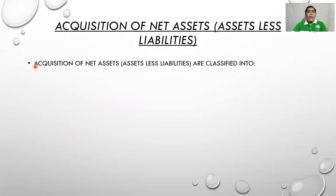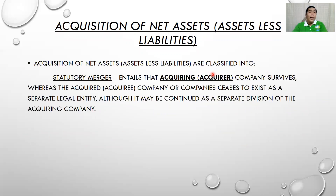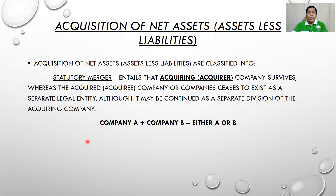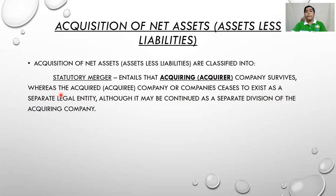Acquisition of net assets is classified into two types. First is the statutory merger, and second is the statutory consolidation. For the statutory merger: the acquiring or acquirer company survives, whereas the acquired or acquiree company ceases to exist as a separate legal entity, although it may be continued as a separate division of the acquiring company.